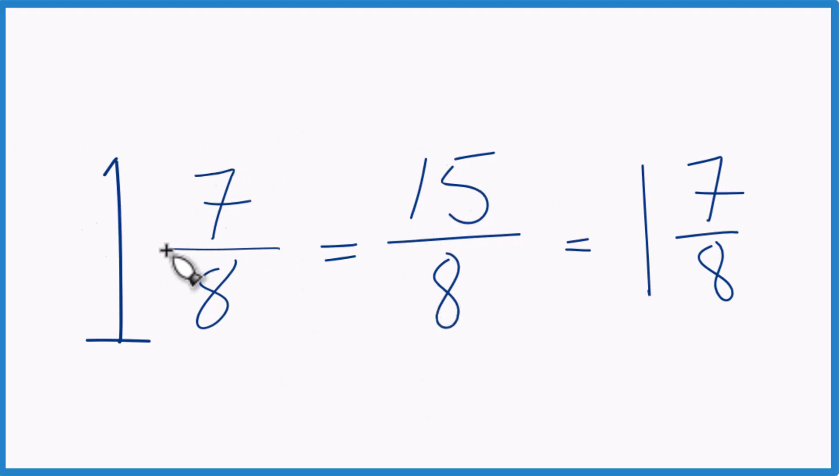This is Dr. B writing 1 and 7 eighths, the mixed number, as an improper fraction. The answer? 15 eighths. Thanks for watching.